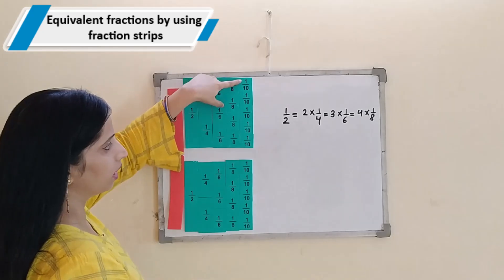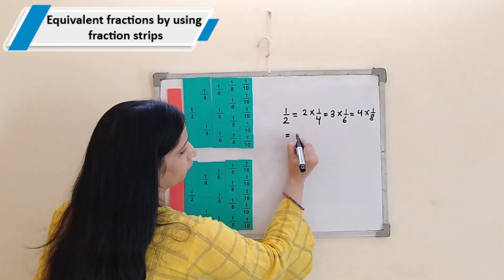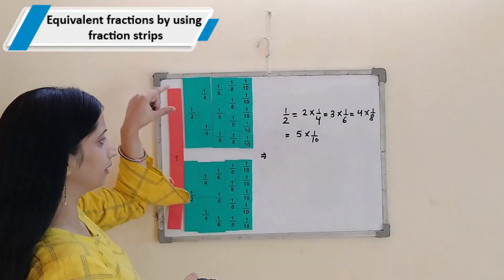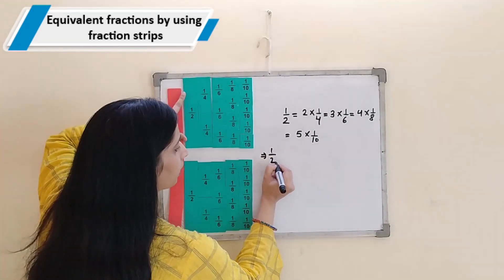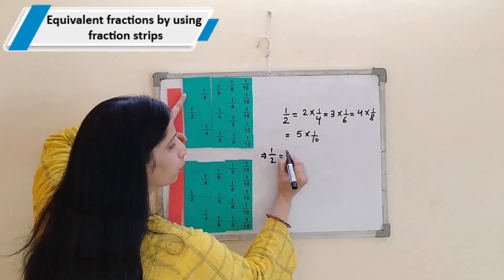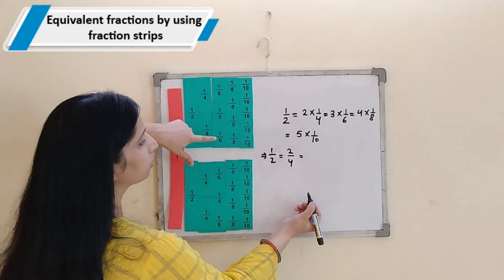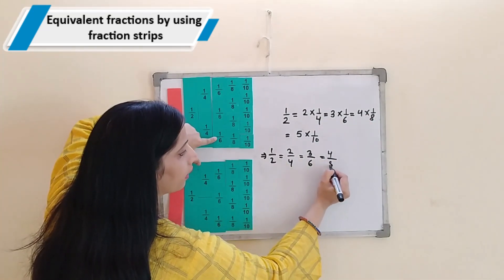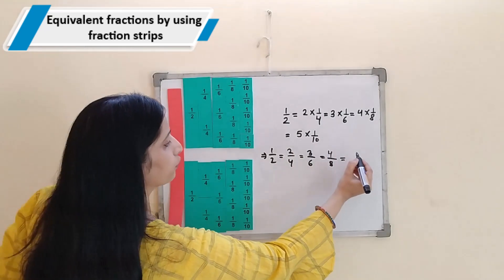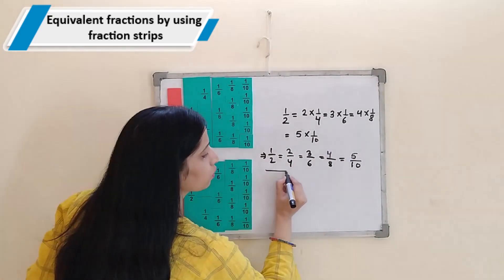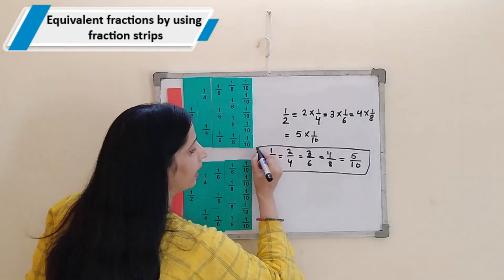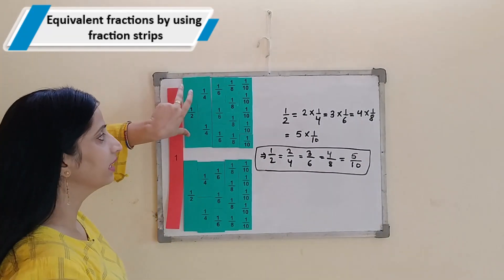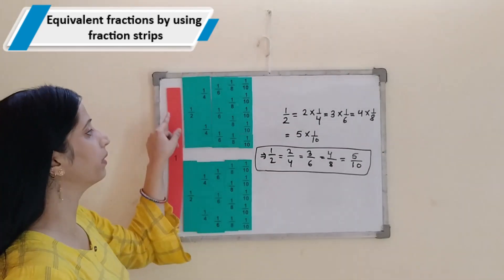And this is equal to 5 one-tenths. So we can clearly see that this half is equal to 2 upon 4. 2 by 4 is equal to 3 by 6. It is 4 by 8. And this is 5 upon 10. So these all are called equivalent fractions because these fractions are representing the same part of a whole — that is a half. So these are the various ways to make a half.